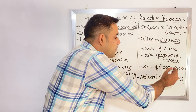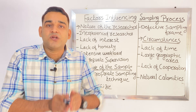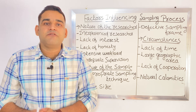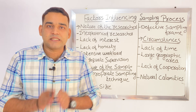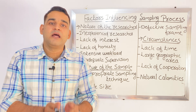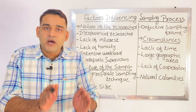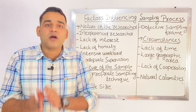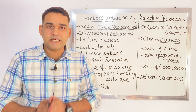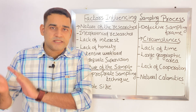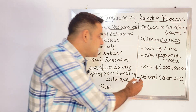Next one is lack of cooperation. That is also very important. If the subjects are not cooperating — for example, pregnant women are not cooperating with you — it will affect the sampling process. Also, from the authorities like the government side, if they are not giving permission or the organization, college, principal, head of department, guide, or co-guide is not cooperating with you, that will also affect the sampling process. We need cooperation from authorities as well as from the sample to conduct the research.